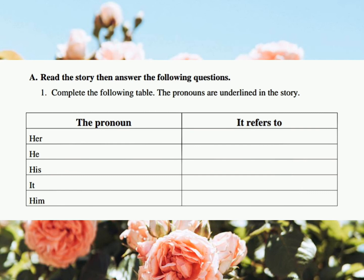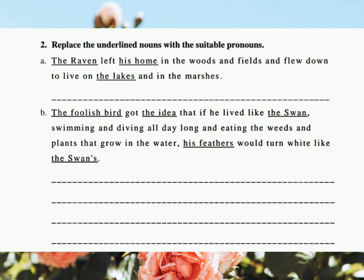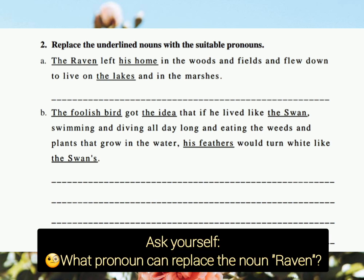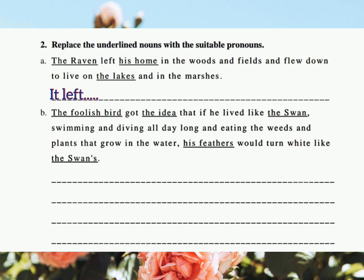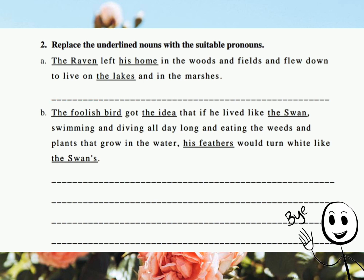In the first exercise, complete the table — the pronouns are underlined in the story, so you have to find what each pronoun refers to. In the second exercise, replace the underlined nouns with suitable pronouns. For example, 'The raven left his home' — what pronoun can replace 'the raven'? We can use either 'it' or 'he.' Thank you, and have a good day.